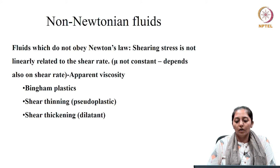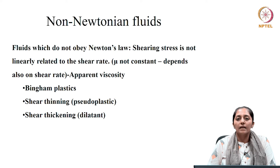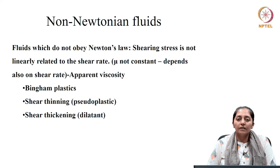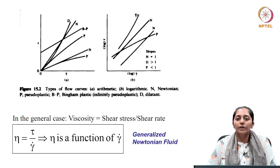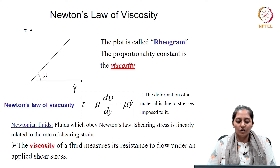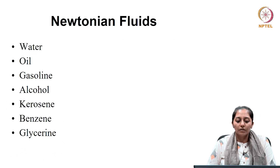Fluids which do not obey Newton's law — where shear stress is not linearly related to the shear rate — have a viscosity that is no more constant and depends on the shear rate. This is called apparent viscosity. Examples include Bingham plastic, shear thinning liquids which are pseudo plastic where fermentation fluids are classed, and shear thickening which are dilatant fluids. The impeller helps in creating more shear and therefore in reducing the viscosity. In general, viscosity equals shear stress to shear strain, but in non-Newtonian fluids apparent viscosity is dependent on the shear strain as well.